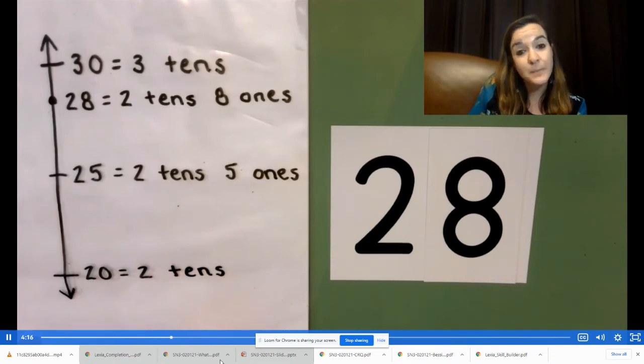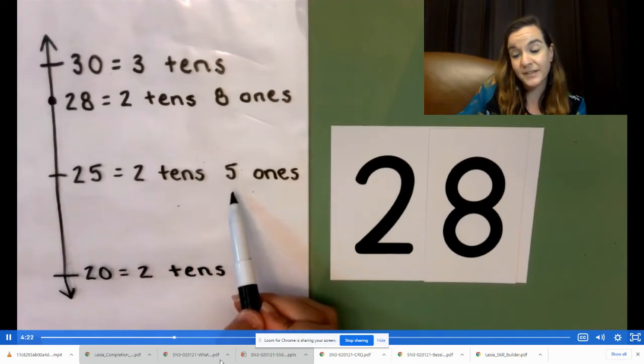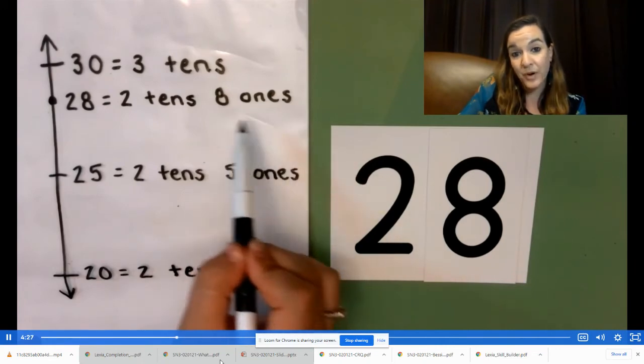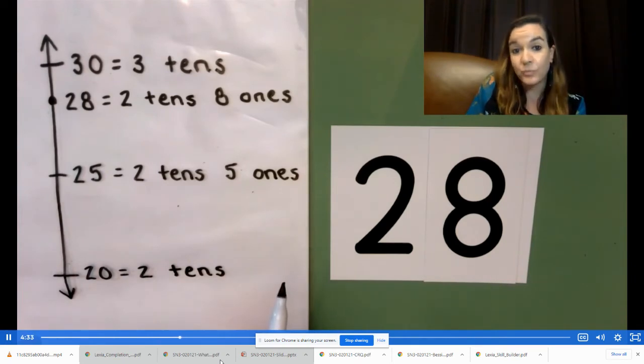Also, if we look at the numbers in unit form. 25 is two tens, five ones. 28 is two tens, eight ones. 8 ones is more than 5 ones. So what is 28 rounded to the nearest 10? 30.